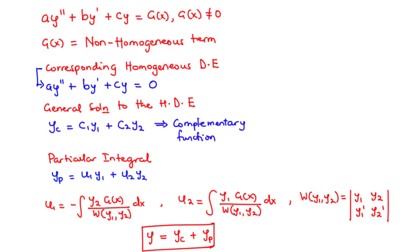Since we've already discussed the method of undetermined coefficients in the previous lesson, we are going to move on to solve differential equations using the method of variation of parameters. Given a second-order linear non-homogeneous differential equation of the form: a·y″ + b·y′ + c·y = g(x), where g(x) is not equal to 0, we say that we have a non-homogeneous differential equation.